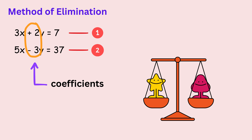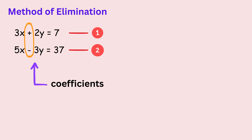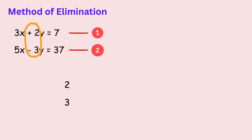Our goal is to make these coefficients exactly the same, so that one positive and one negative will cancel each other out. Here the coefficients of y are different, so we choose a common multiple that both numbers can become.